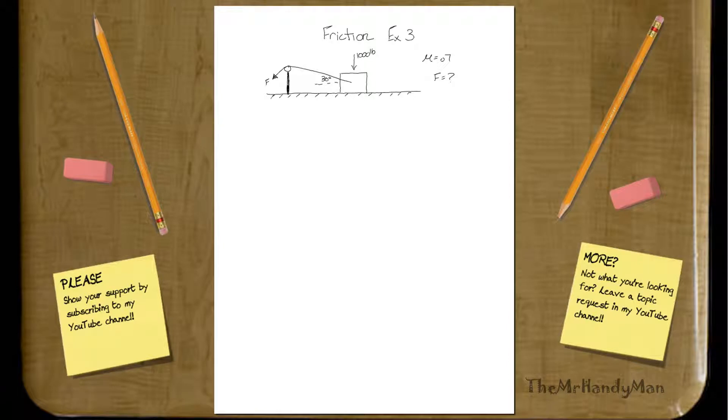This is the third example of friction problems, and what we have here is a cable being pulled slightly upwards at a 30 degree angle on this 1,000 pound box, and we want to know what is the force required to pull this box, since we're pulling slightly up.